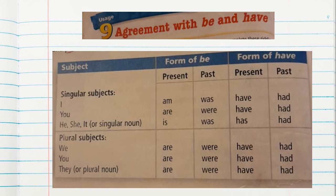Now let's see the form of the verb have. Using the same singular subjects: I have in present, I had in past. You have in present, you had in past. For singular subjects he, she, it: he has, she has, it has, the dog has. In past, you will use had. For the plural subjects: we have, you have, they have. Always pay attention to the subject in order to use the correct form of the verb.